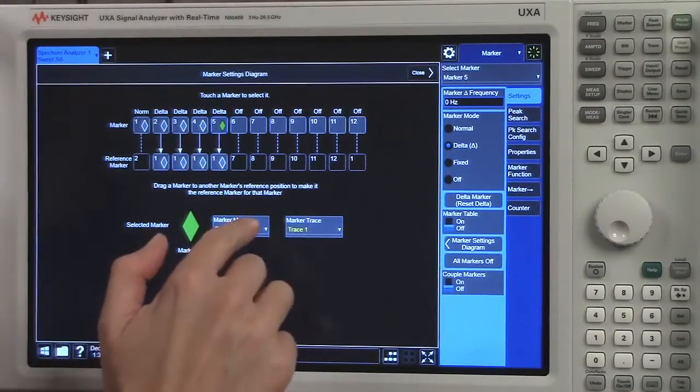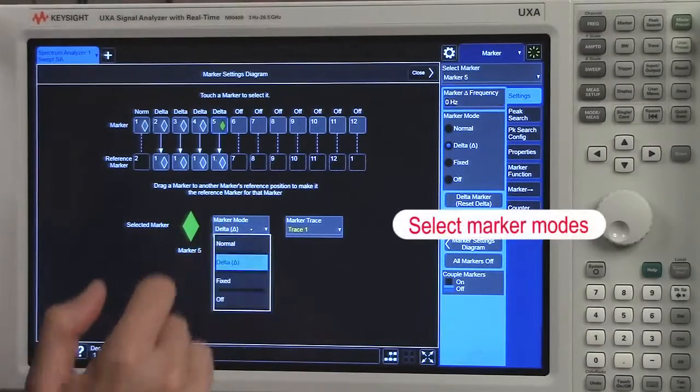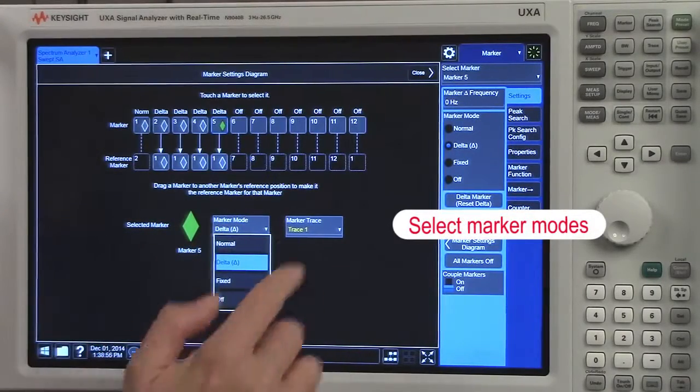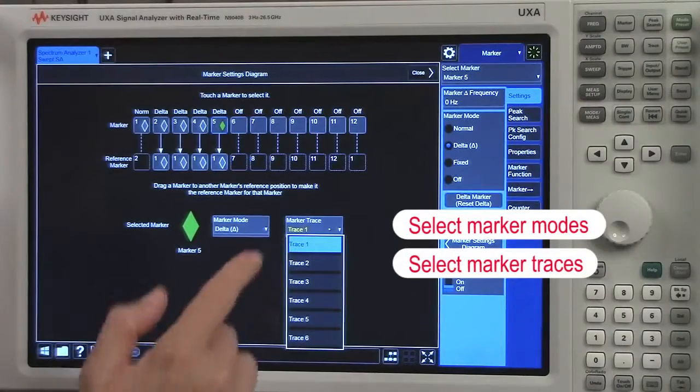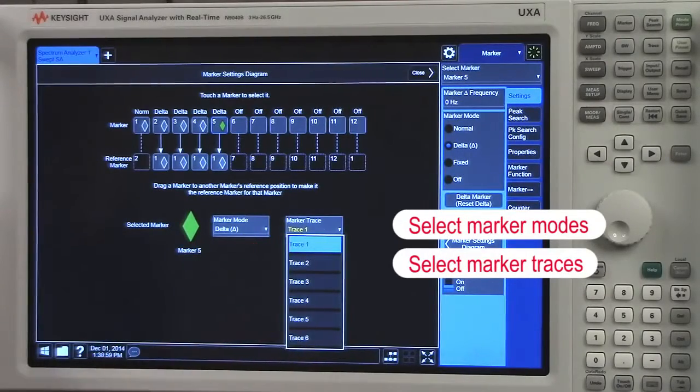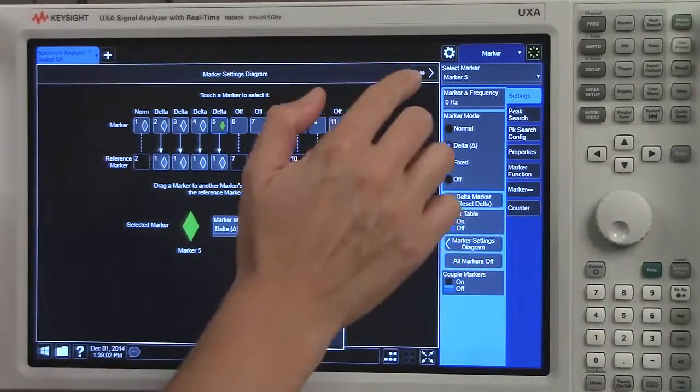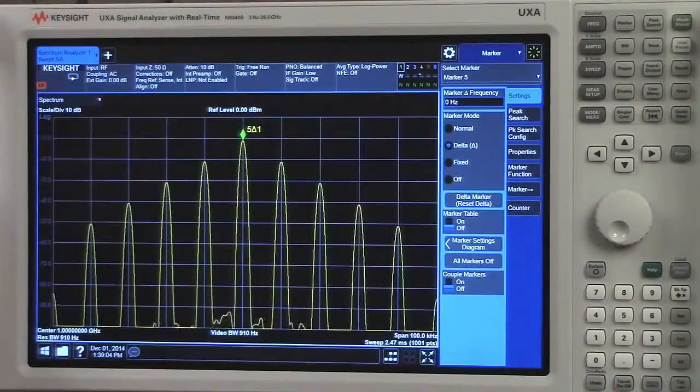And also for our markers, we can select what mode it has. And also we have the ability to select from trace one all the way to trace six. So I'll close the marker settings diagram.